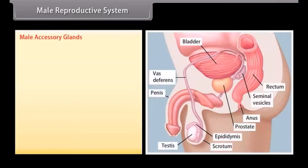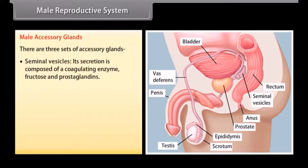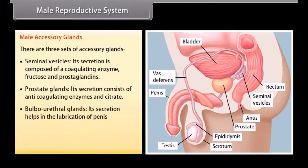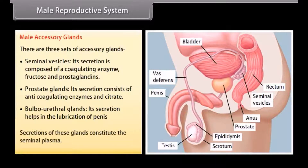There are three sets of male accessory glands. The seminal vesicles secrete a coagulating enzyme, fructose, and prostaglandins. The prostate gland secretes anticoagulating enzymes and citrate. The bulbourethral glands produce secretions that help in lubrication of the penis. The secretions of these glands together constitute the seminal plasma.